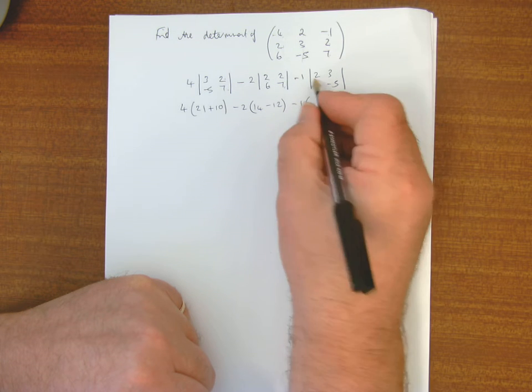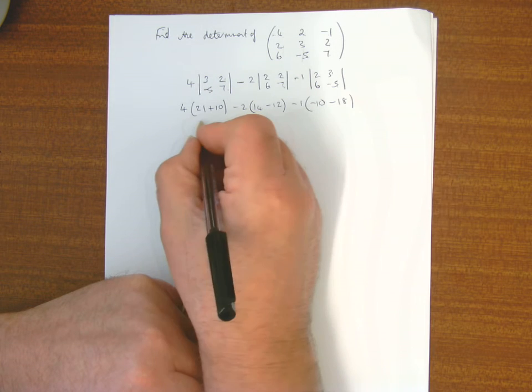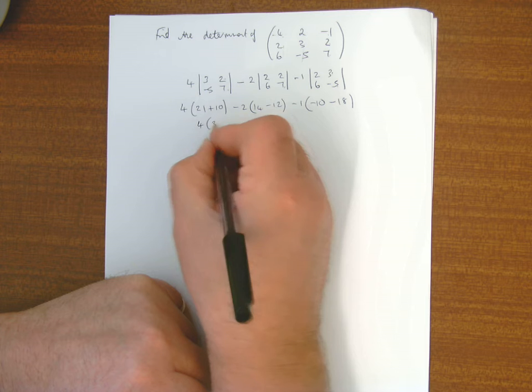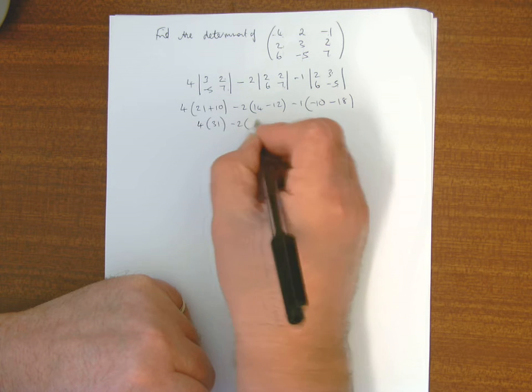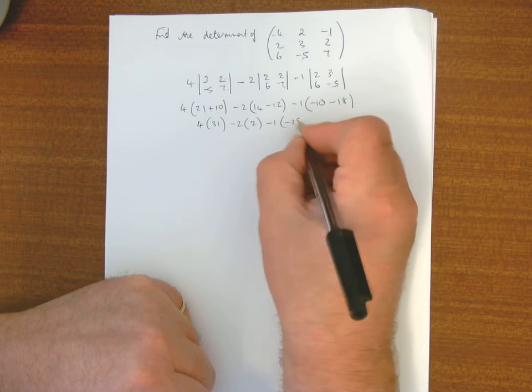Minus 1, and that's minus 10, take away 18, that's 4 lots of 31, take away 2 lots of 2, minus 1, times minus 28.